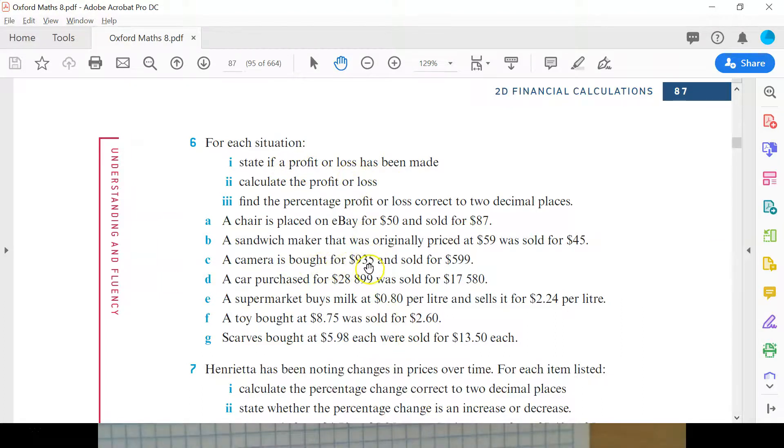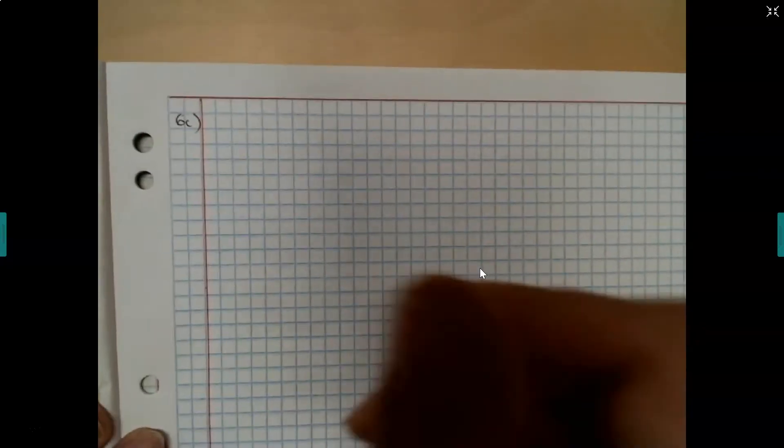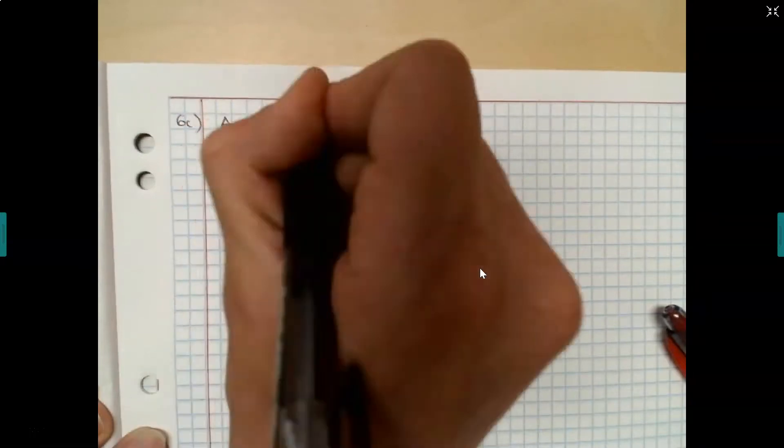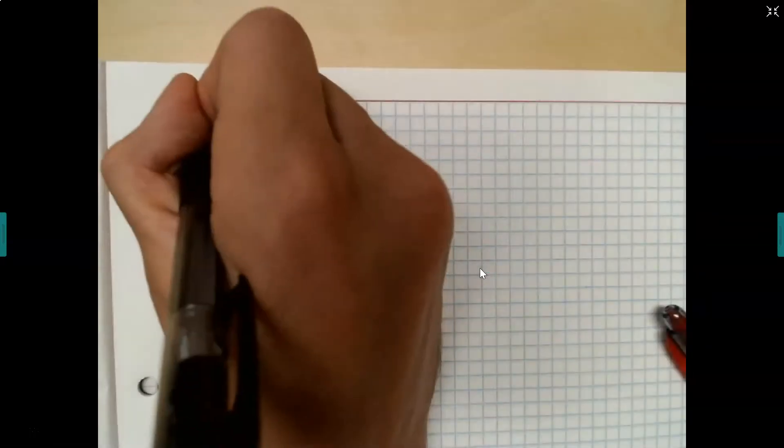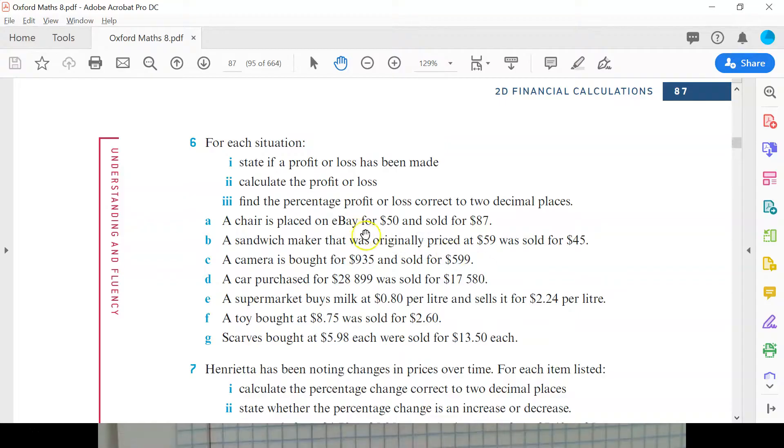So the first thing we need to do is state if a profit or loss has been made. So it was bought for $935 and sold for $599. Was a profit or loss made? All right. So a loss. That's for part one. Why was it a loss? Because we sold it for less than what we bought it for. All right. So they've lost almost $336.